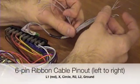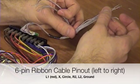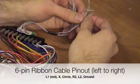and then the one that has six going from left to right has L1, X, circle, R2, L2, and then your ground wire.